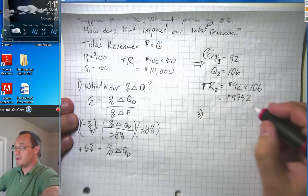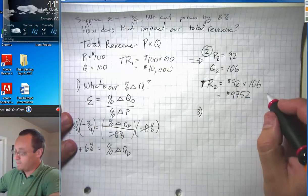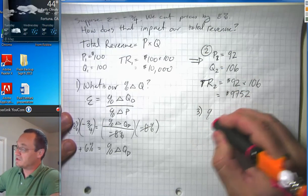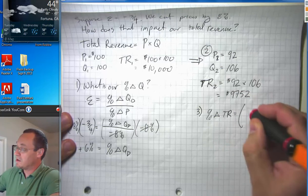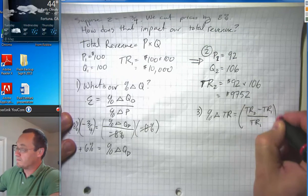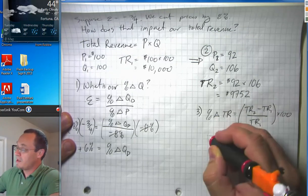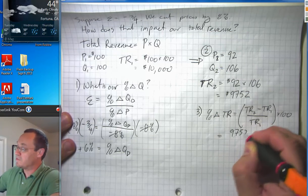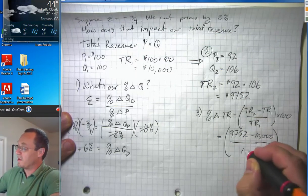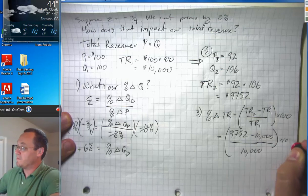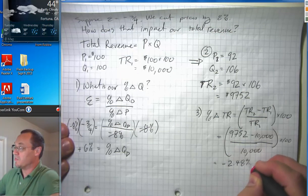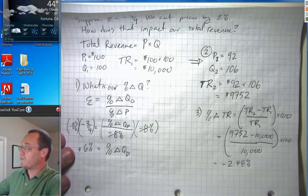And when we compare that versus our previous ten thousand dollars revenue, we could do a percentage change. Our percent change in total revenue is total revenue two minus total revenue one over total revenue one times one hundred. And that's going to be nine seven five two minus ten thousand over ten thousand times one hundred. I believe the answer here is negative two point four eight percent. That's our overall impact on revenue.